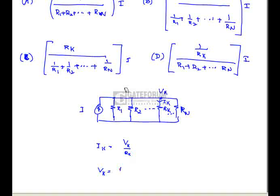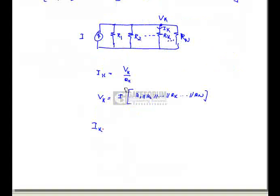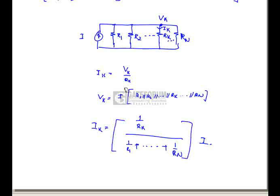Here V K is nothing but I amperes into equivalent resistance. So I K equals to 1 by R K divided by 1 by R 1 plus up to 1 by R N into I. Hence option b is correct.